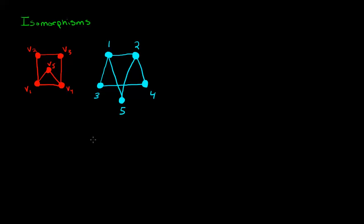Let's talk about isomorphisms. The two graphs that I've drawn here may look a little different, but if you look closely you'll notice that they have exactly the same structure. An isomorphism is a formal description that they are essentially the same graph.